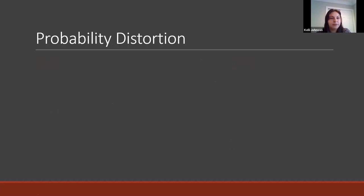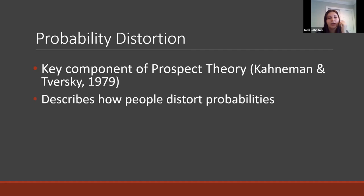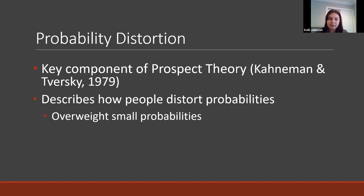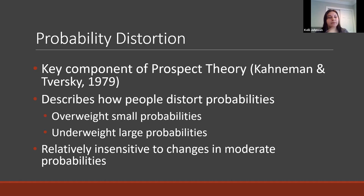So we'll start with probability distortion. Probability distortion is a key component of prospect theory, and it describes how people distort the probabilities they are given when making a decision. Specifically, people tend to overweight small probabilities — acting like they're larger than stated — and underweight large probabilities. People are also relatively insensitive to changes in moderate probabilities.